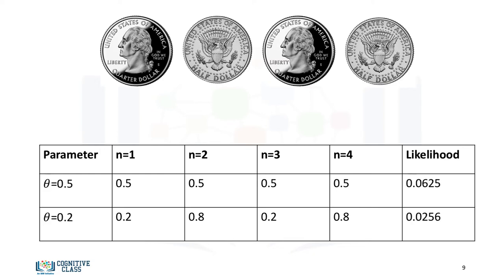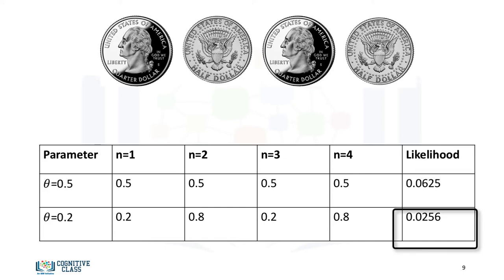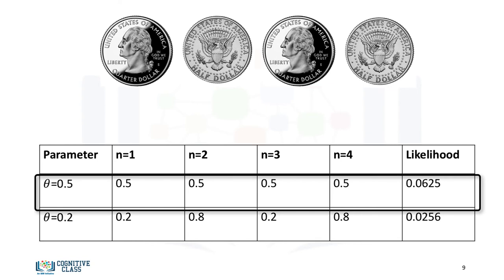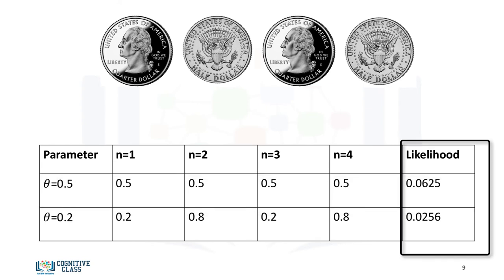For the following sequence, the likelihood for theta equals 0.5 is 0.0625 and 0.025 respectively. Now if we look at the actual sequence, it turns out the probability of heads or tails is equally likely — i.e., the parameter theta equals 0.5 is much more likely to generate the sequence. And if we look at the corresponding likelihood for that parameter value of 0.5, we see it's significantly larger than the likelihood for theta equals 0.2.